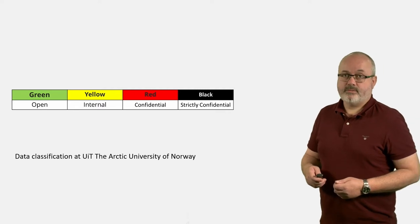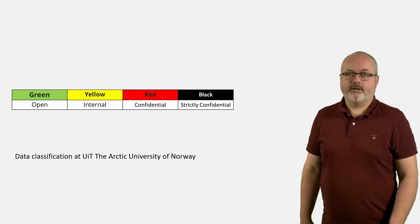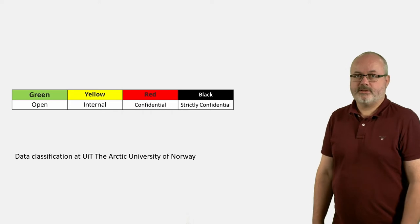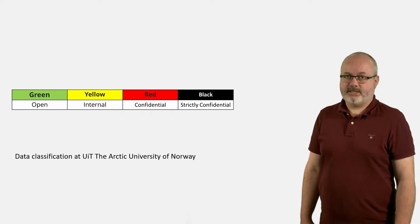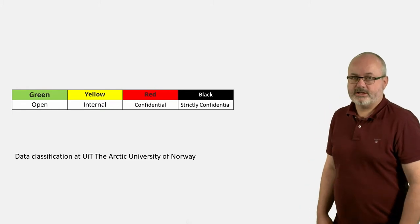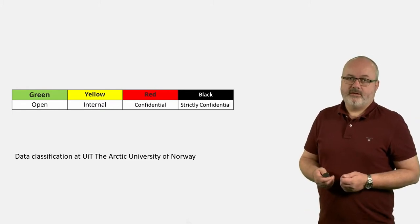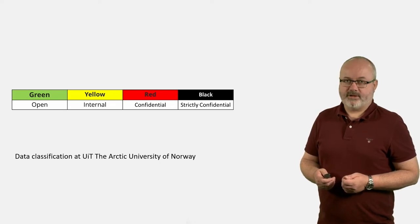As an example, UiT, the Arctic University of Norway, uses a system of four levels with increasing sensitivity: open, internal, confidential, and strictly confidential. The levels are color-coded as shown. Once you have classified your data, there will be implications for your handling of them.